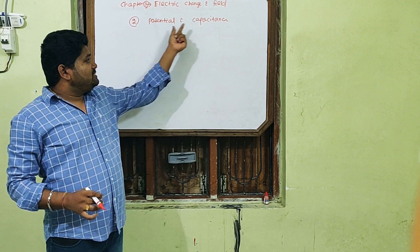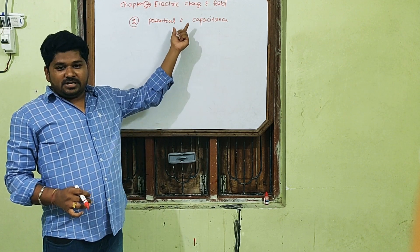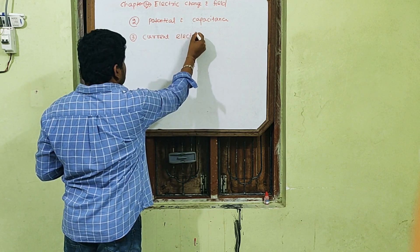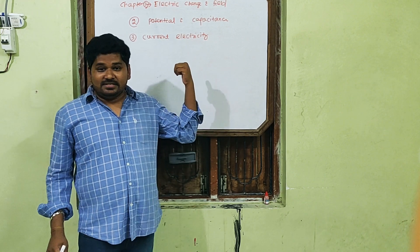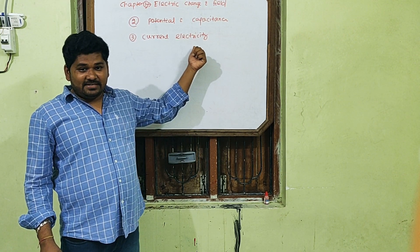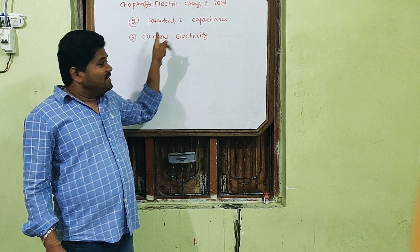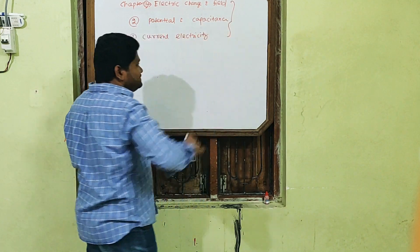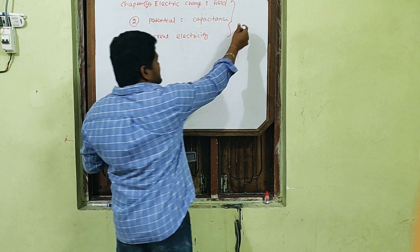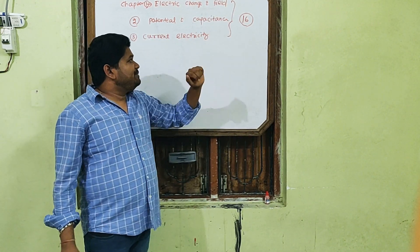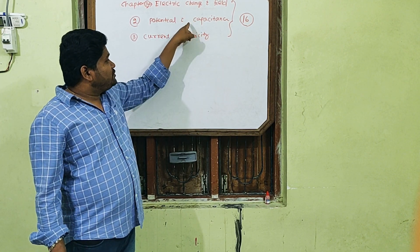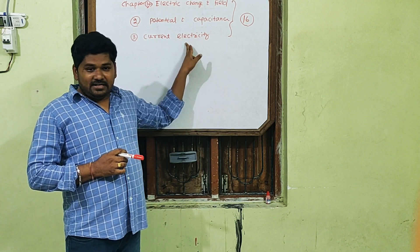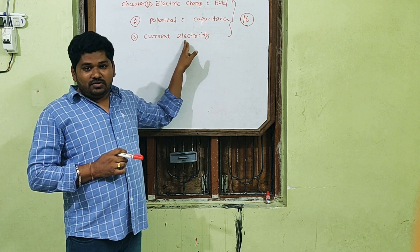Chapter 3 is Current Electricity. Now the charge starts moving. In the first two chapters, charge remained at rest, but in the third chapter, charge now moves, so current flows. These three chapters contribute a total of 16 marks in the Board Exam. The first two chapters should be completed before Summer Vacation, and the Current Electricity chapter will start after Summer Vacation, around June 19 or 20.